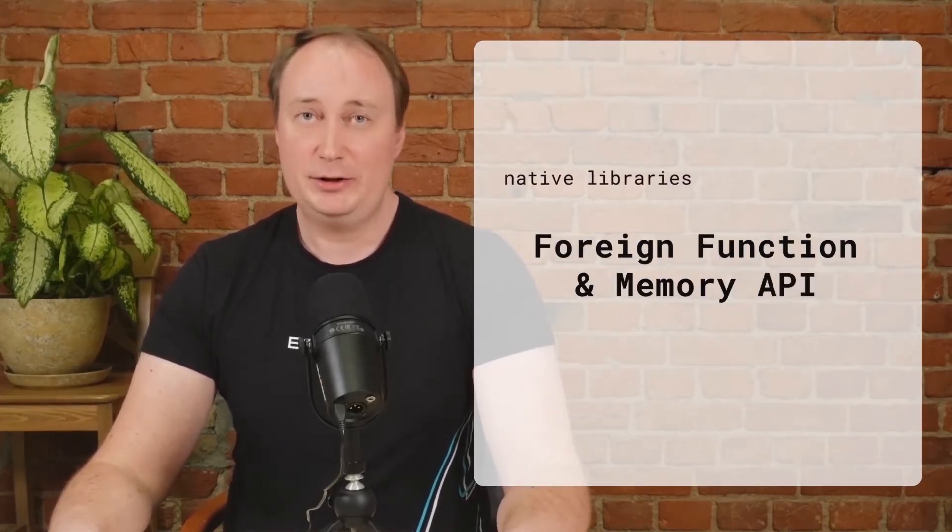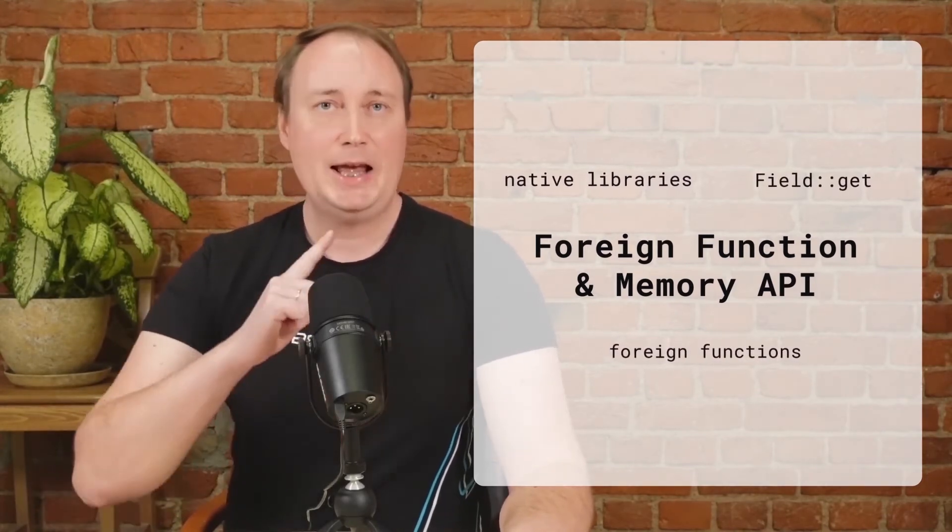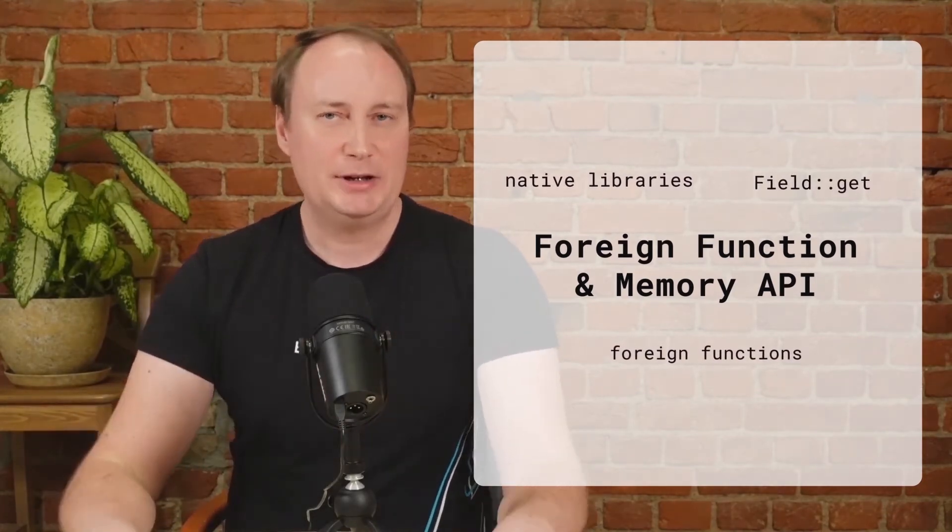This JEP affects the inner workings of Java computing. It re-implements java.lang.reflect core using method handles, replacing dynamic bytecode generation variants of reflective operations. This enhancement will lessen the usage of the unsafe API in core reflection and also help the development of new language features like primitive objects.